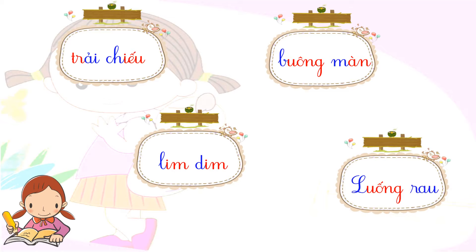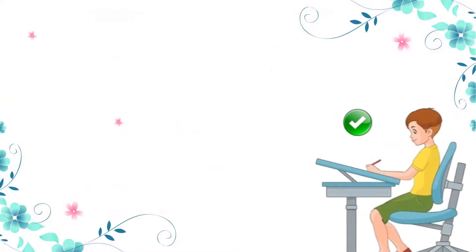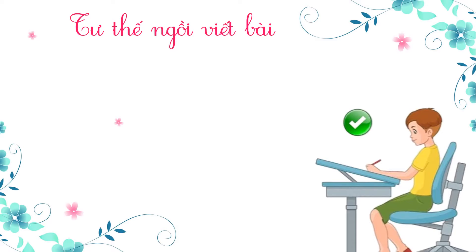Cô có lời khen các bạn đã viết đúng. Ngoài những từ các em vừa viết, nếu bạn nào cảm thấy còn từ nào mình dễ nhầm lẫn nữa thì có thể viết thêm ra bảng con hoặc vở nháp. Vừa rồi cô đã hướng dẫn các em viết từ khó. Trước khi bắt đầu viết chính tả, các em cùng nhớ lại tư thế ngồi viết.